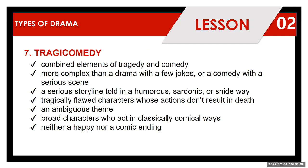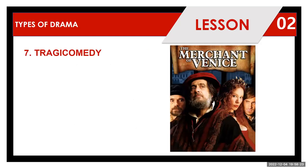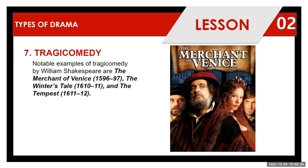In tragicomedy, the audience must understand whether the ending is tragic or comic — that ambiguity is what makes it challenging to comprehend. A notable example is Shakespeare's The Merchant of Venice, which was also adapted into a film. The Merchant of Venice, The Winter's Tale, and The Tempest are all notable examples of tragicomedy by Shakespeare, and they connect and stand out among his works.